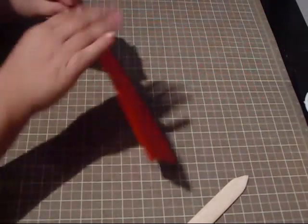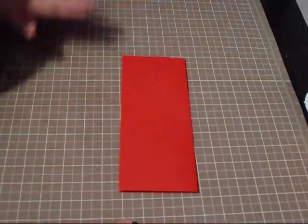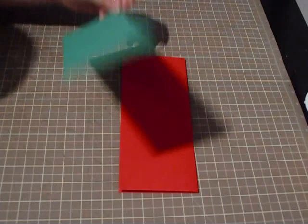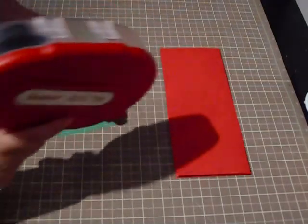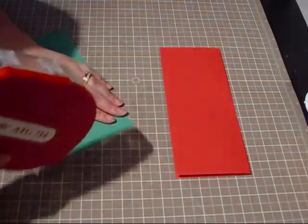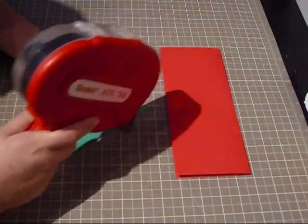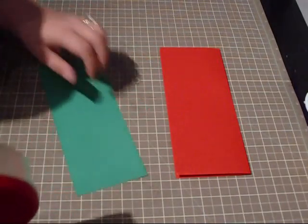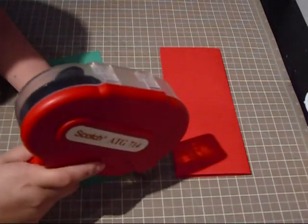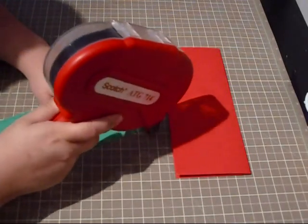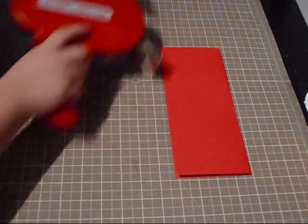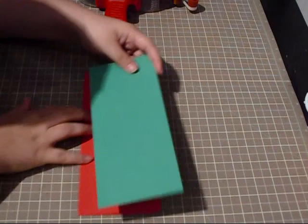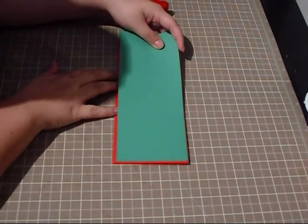So this is what our card is going to look like. And then I have my first layer, a green mat. And this is cut out at 9.25 by 3.75. And we're just going to go ahead and adhere this down. Just want to make sure it's lined up.